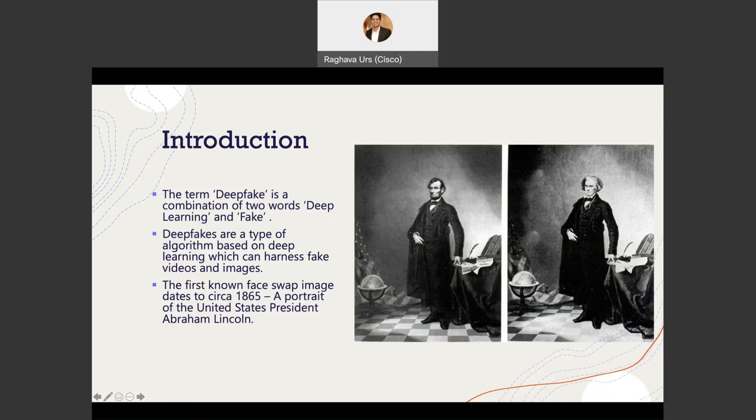In the portrait of the United States President Abraham Lincoln that you could see here, this is a fake image which was created by superimposing President Lincoln's face onto the politician John Calhoun's body.